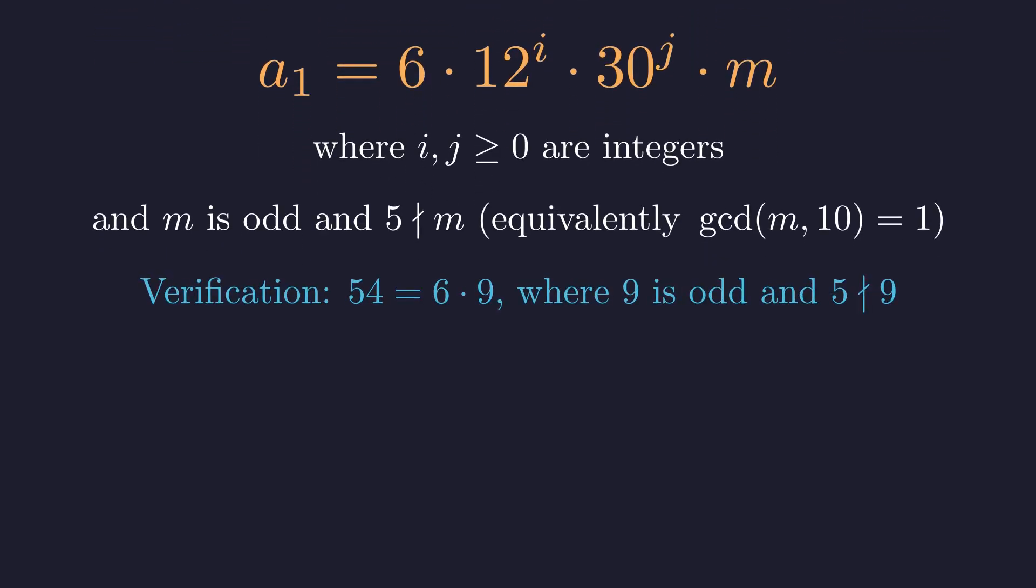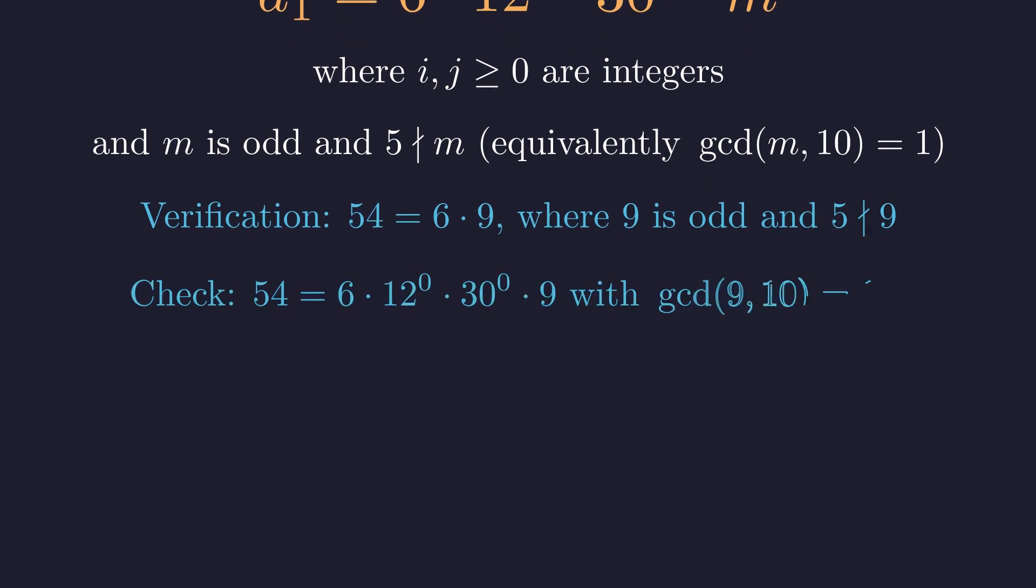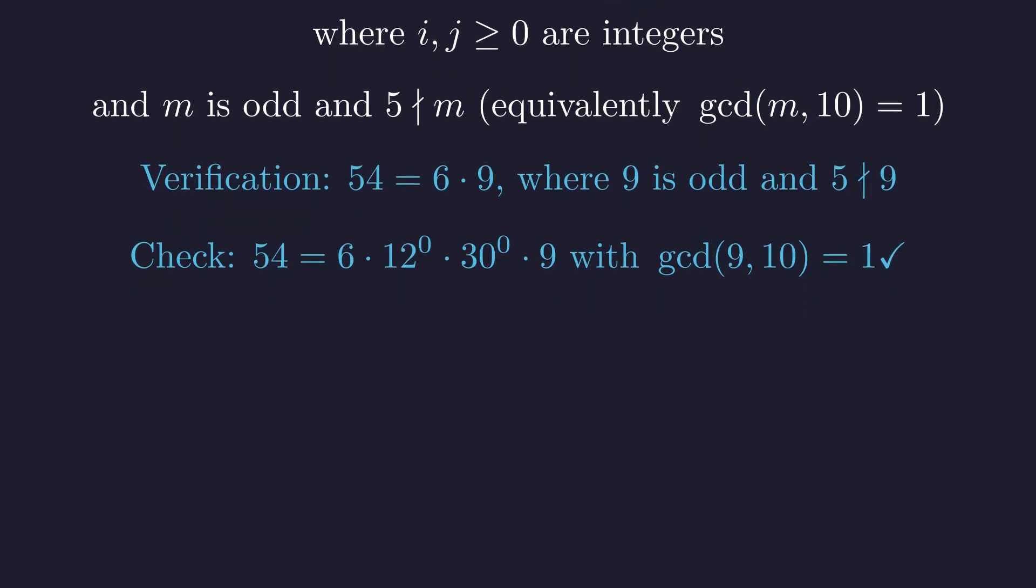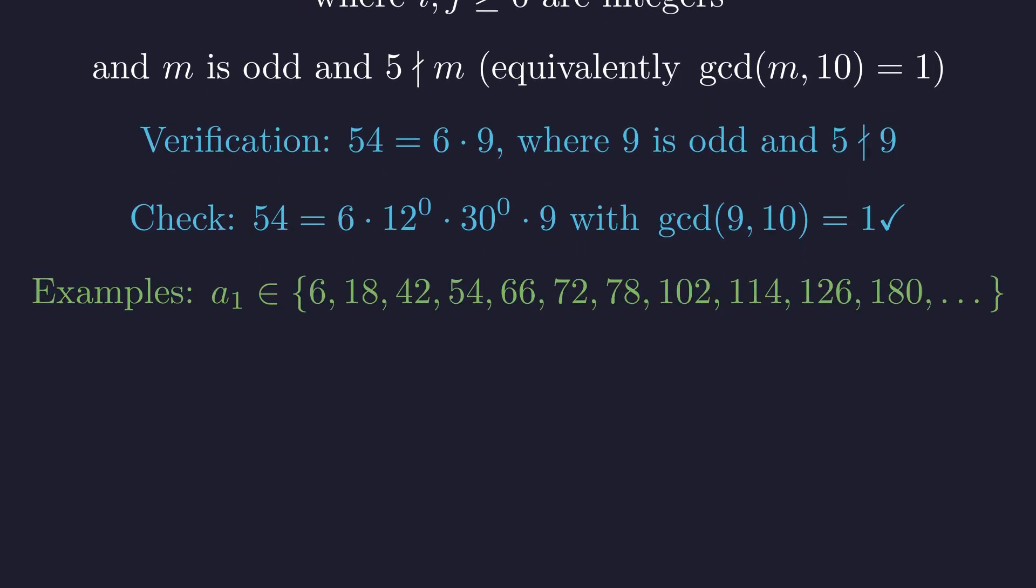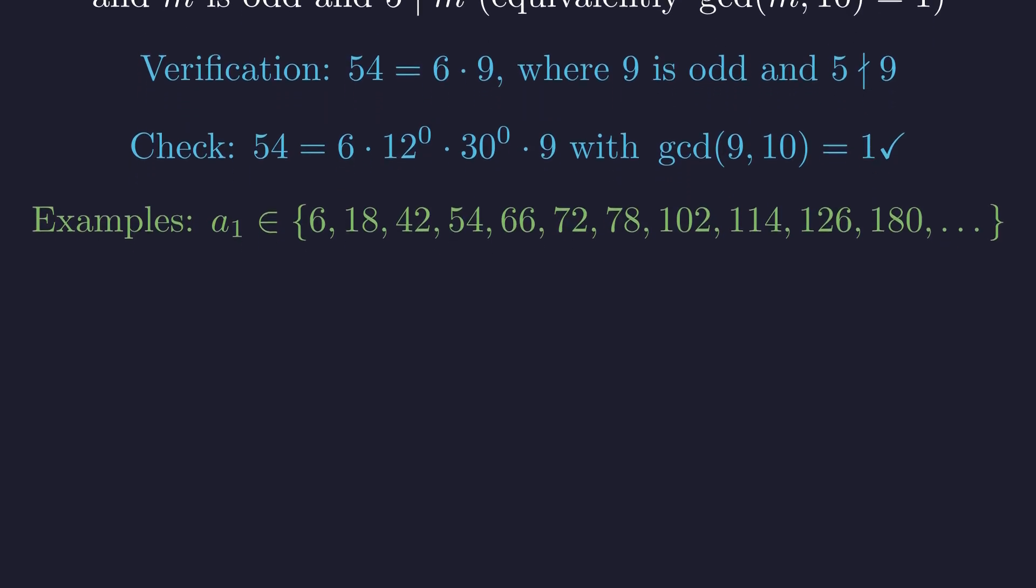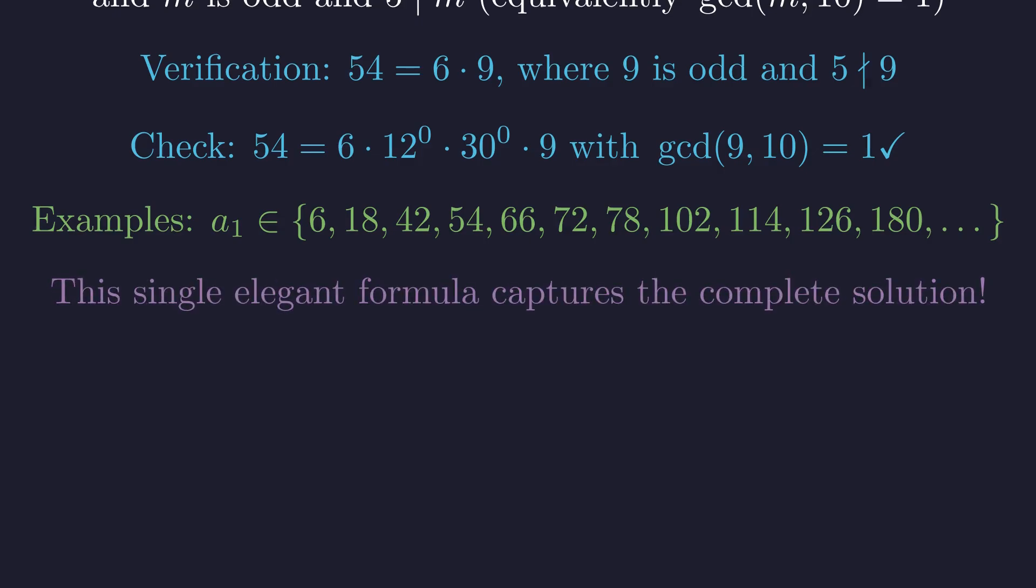Let's test this formula with an example. The number 54 can be written as 6 times 9. This matches our formula with i and j equal to 0 and m equal to 9. The greatest common divisor of 9 and 10 is 1, so 54 is a valid starting value. Other examples include 6 with m equal to 1, 72 with i equal to 1 and m equal to 1, and 180 with j equal to 1 and m equal to 1. All numbers generated by this formula are valid starting points.